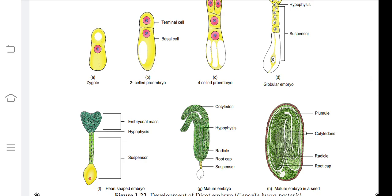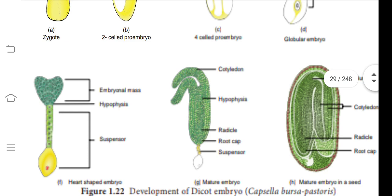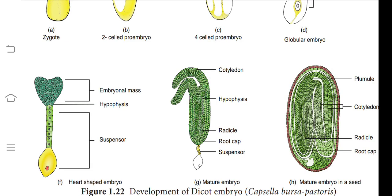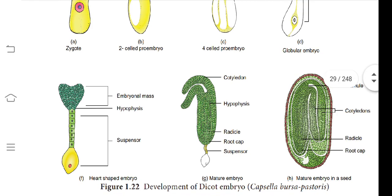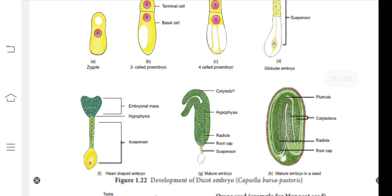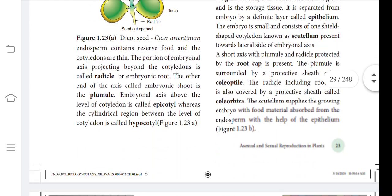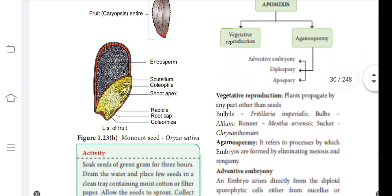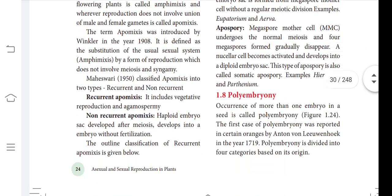You have to draw the mature embryo in the seed. All the diagrams — zygote, two-cell, four-cell, globular embryo, heart-shaped embryo, mature embryo, and mature embryo in seed — are required. Drawing only the diagrams for these stages is worth five marks.